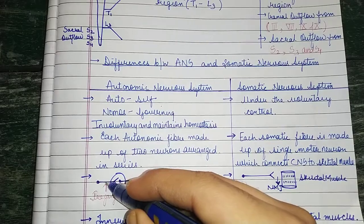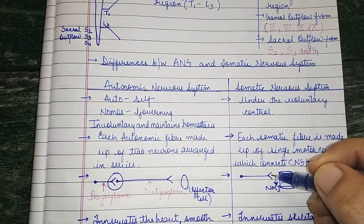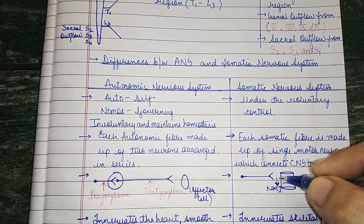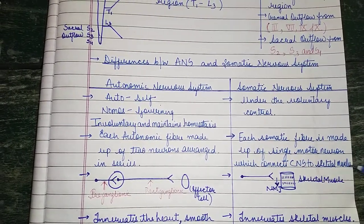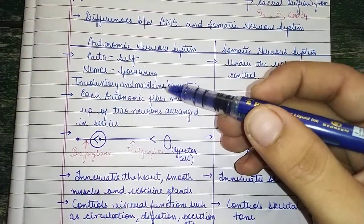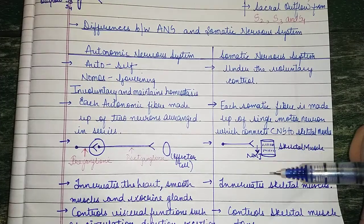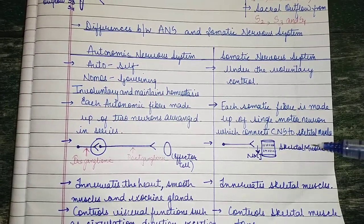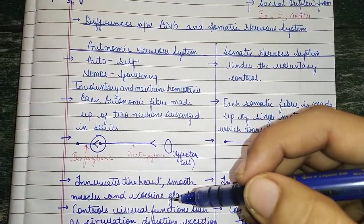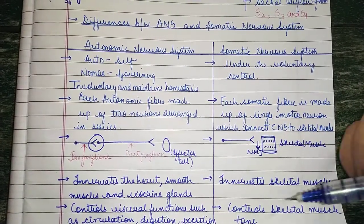In the somatic nervous system, there is no differentiation into pre- and postganglionic — it is a single fiber connecting the CNS to the skeletal muscles. The autonomic nervous system is present in the heart, smooth muscles, and exocrine glands, whereas the somatic nervous system is present in skeletal muscles only. The autonomic system controls visceral functions such as circulation, digestion, and excretion, while the somatic system controls skeletal muscle tone.